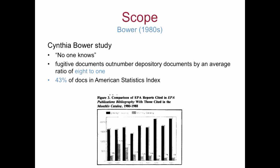Some of the important fugitive series that DocX saved include congressional committee prints and the daily report of the Foreign Broadcast Information Service. In these next three slides, I want to move on to the scope of the fugitive problem. Here are some examples from Cynthia Bauer's findings from the 1980s. She has some fascinating data that seems very familiar even though it is more than 20 years old. She began by saying that no one knows the scope of the problem — and that's probably still true.